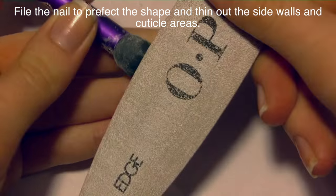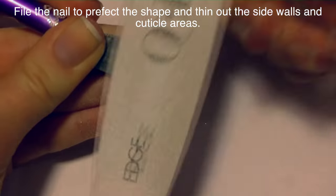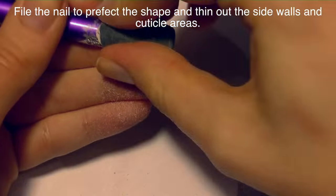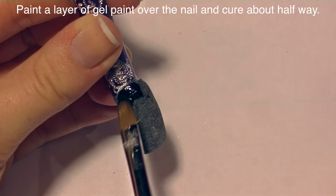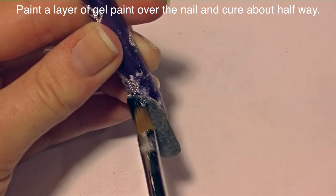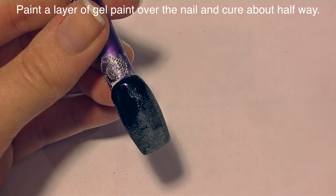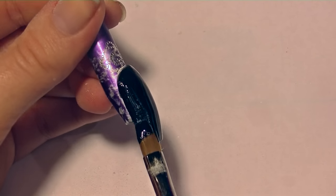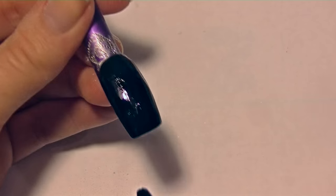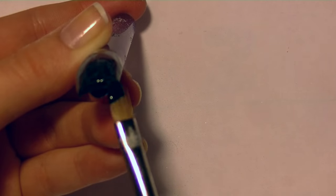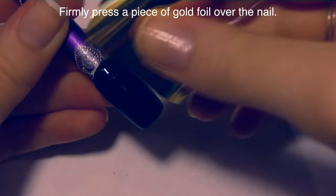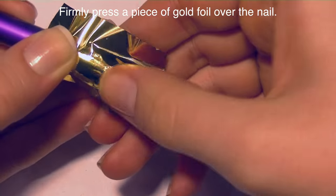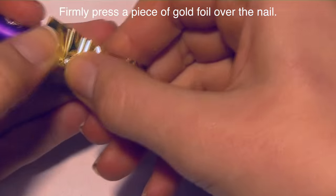Now I'm going to be filing it with a 180 grit file. You want to make sure it's really nice and smooth so that the foil transfers as well as it can. Then I'm going to be painting it with gel paint. Normally I would buff the nail but because I'm using gel paint, it will sort of level off any scratches that file may have left behind. Then I'm going to throw that in my lamp for half the time I normally would so I can use transfer foil on it.